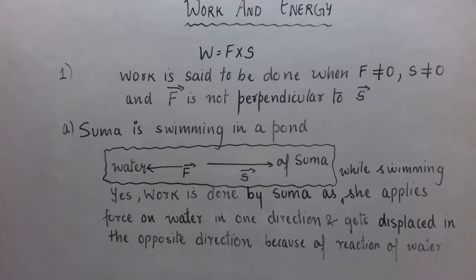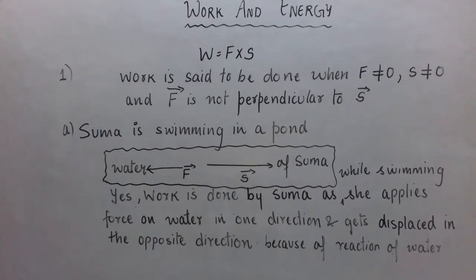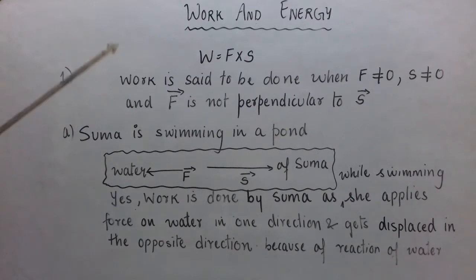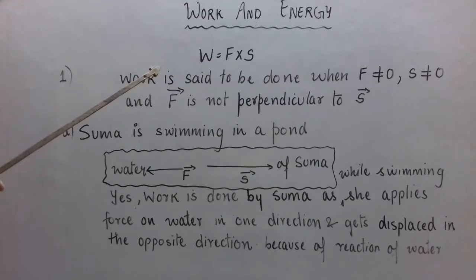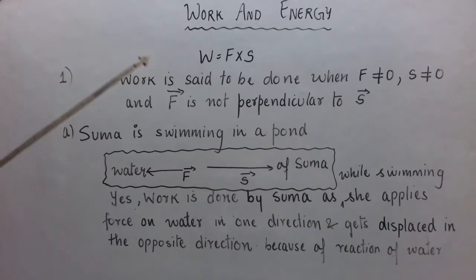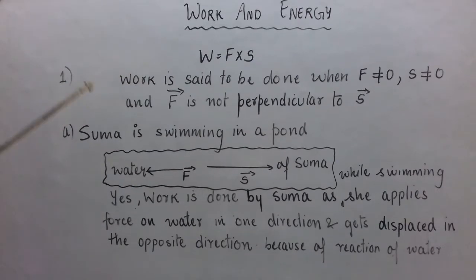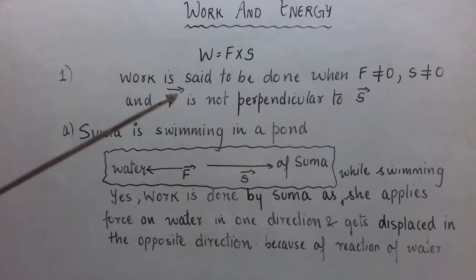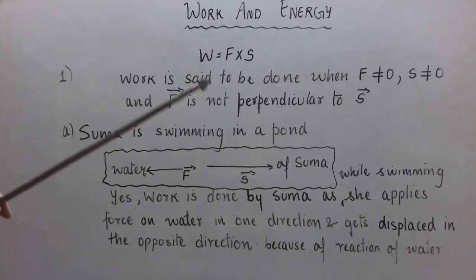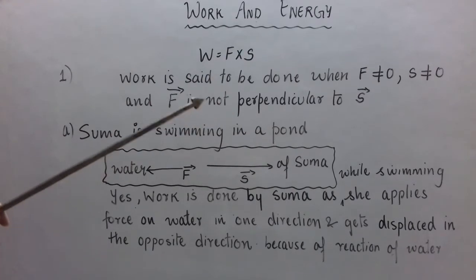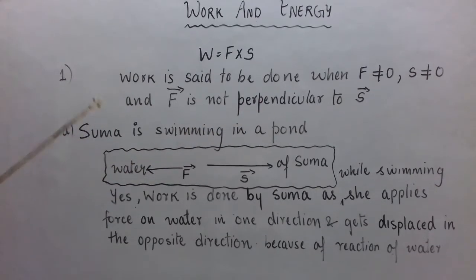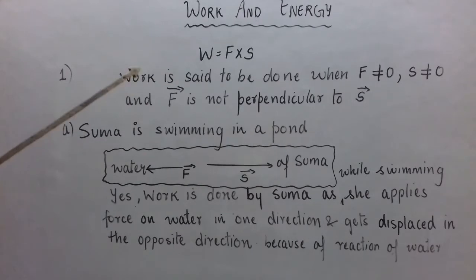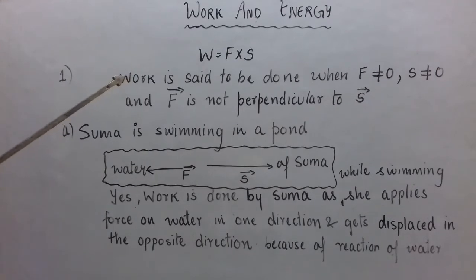Let us first see what is work done and what is the formula for work. Work W is equal to F into S, where F represents force and S is the displacement produced by that force. Work is said to be done when force is applied on the body, meaning F is not equal to zero, and the body gets displaced, meaning S is not equal to zero. There is also a third factor, cos theta, which is actually present but not shown when it equals one. The actual formula is W = F × S × cos θ.